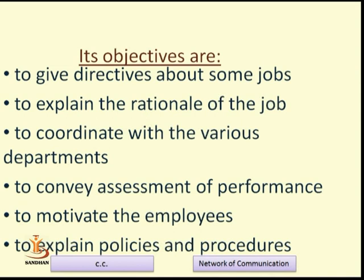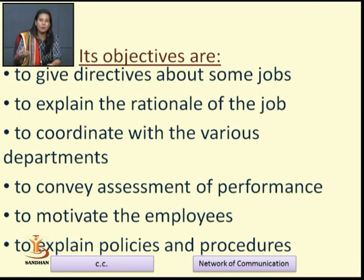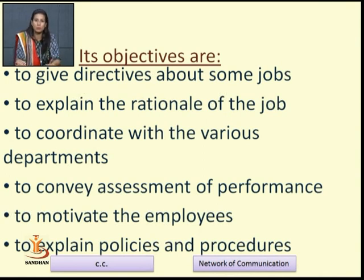Now we will look at the four aspects of downward communication: meaning, objectives, advantages, and disadvantages. The first objective is to give directives about a job. Suppose it is your first day at work — your boss will direct you, appoint duties to you, and tell you what to do and how to do it. That is downward communication: your boss telling you what your job and duties are.